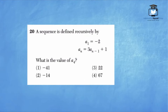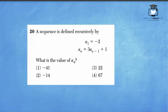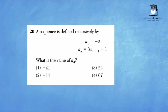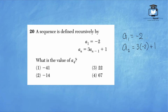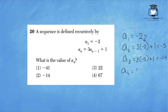Number 20: a sequence is defined recursively by a₁ equals negative 2 and aₙ equals 3 times aₙ₋₁ plus 1. What is a₄? a₁ equals negative 2. a₂ equals 3 times negative 2 plus 1 equals negative 5. a₃ equals 3 times negative 5 plus 1 equals negative 14. a₄ equals 3 times negative 14 plus 1 equals negative 41. Answer choice 1 is correct.